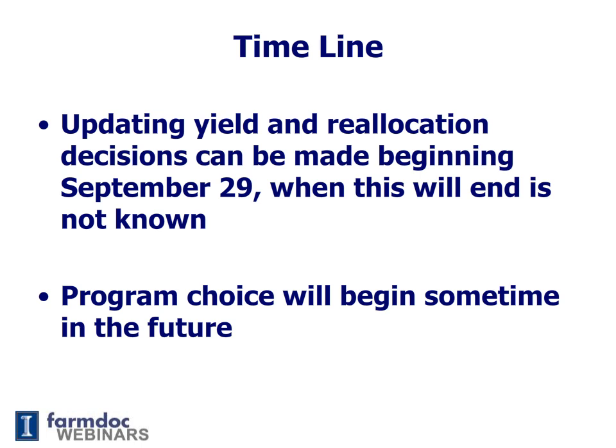The timeframe in which landowners and producers will have to make these decisions is unknown. Updating yields and reallocation decisions — the first two decisions — can be made after September 29th. We still don't know when the signup period for decisions one and two will end, but you will make those decisions before you make the program choice. The program choice, the third decision, will begin sometime in the future.